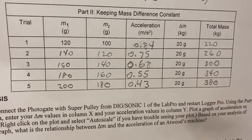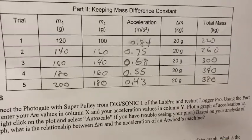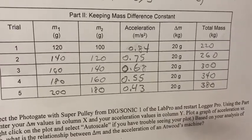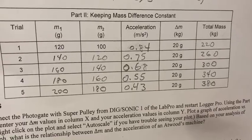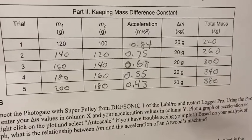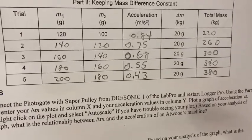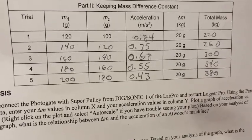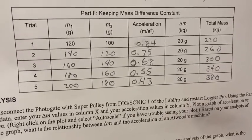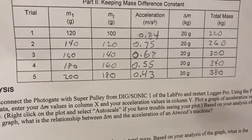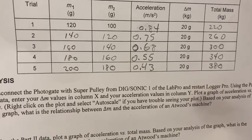Note that the difference between each of those two is 20 grams, which is in column five. Column four is the acceleration, and that for the sum of 220 grams is 0.84 meters per second squared.